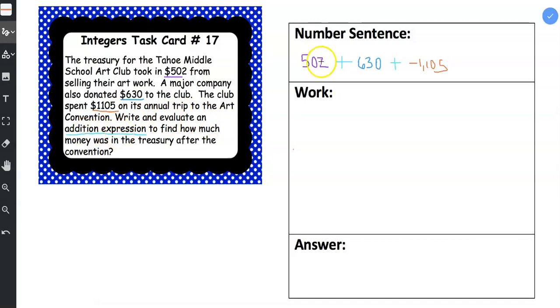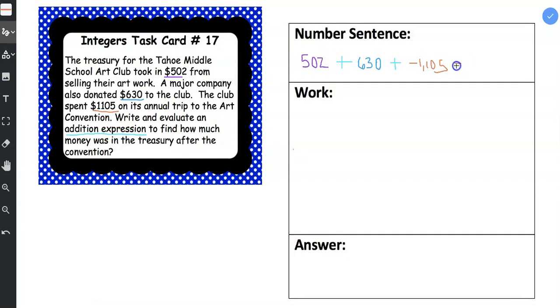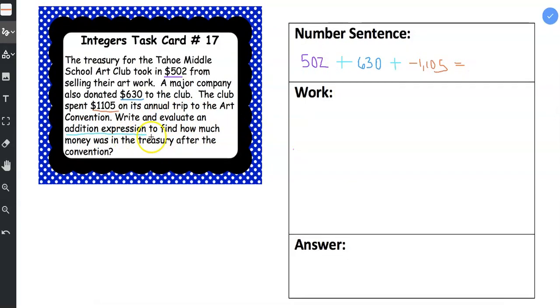And then it says write and evaluate an addition expression so we wrote our addition expression and then now we need to evaluate it. And we're trying to figure out how much money was in the treasury after the convention.